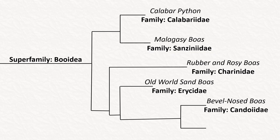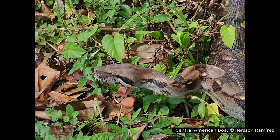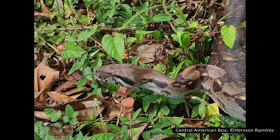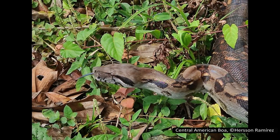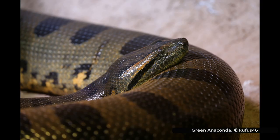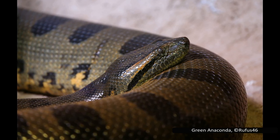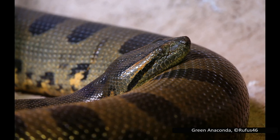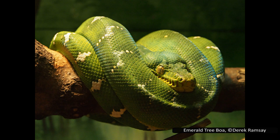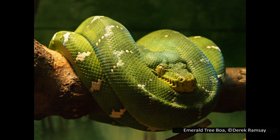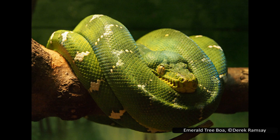Finally, the last family here is Boidae, or the true boas. The relationship between boas and the other groups is still debated, with many of the other families having been included here at one time or another. With the phylogeny used here, the true boas contains 34 species across five genera. They are heavy-bodied, non-venomous snakes that constrict their prey, found in Central and South America. The most well-known species is the boa constrictor, though several of its subspecies have more recently been elevated to separate species. Another well-known boa is the green anaconda — the heaviest snake in the world and the second longest after the reticulated python. The boa constrictor and anaconda are common in the exotic pet trade, and keepers need to take care when handling them due to their large size.